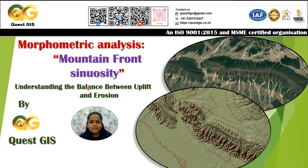Let's start with understanding what mountain front sinuosity is and how it helps us understand the balance between uplift and erosion in a landscape. In these two pictures — Google satellite imagery and terrain data (digital elevation model) — you can see that all these mountain fronts have different shapes. The question arises: why do these mountain fronts have different shapes? At some points they look straight, while at other places they look more sinuous. We are going to investigate these different shapes and how the valley floor width-to-height ratio tells us about landscape evolution.